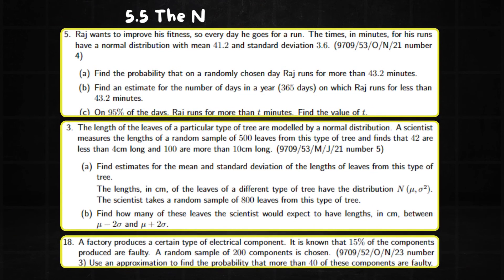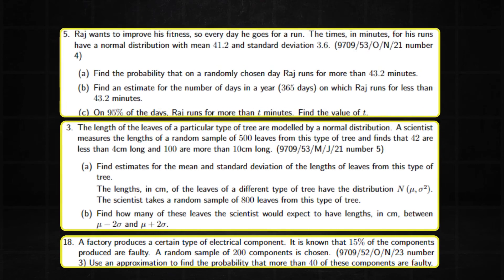For the normal distribution, we have the standard find the probability that this is less than that, which is usually accompanied by a find the value of t question. Then there is the find in the value of mu and sigma, and finally there is the approximation question.